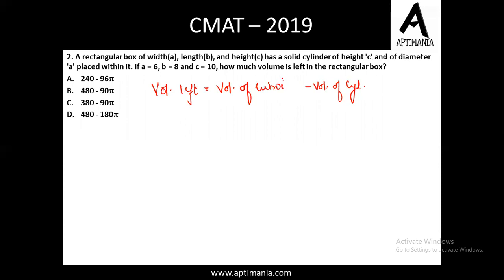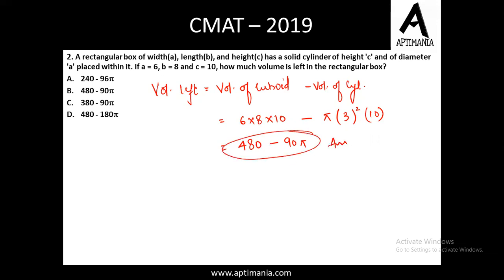Volume of the cuboidal box is L×B×H = 6×8×10. Volume of the cylinder is πR²H. Since the diameter of the cylinder is A = 6, the radius is 3. So volume of cylinder = π×3²×10 = 90π. Volume of cuboid = 480. Volume left = 480 − 90π. The correct answer for question number 2 is option B, 480 minus 90π.